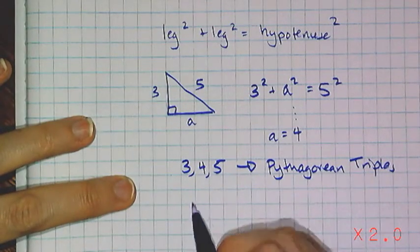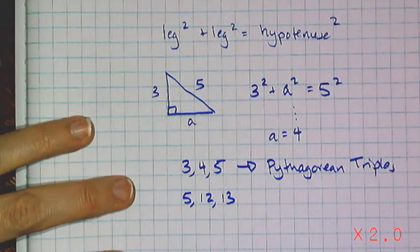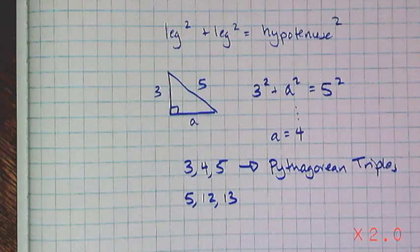And there are infinitely many of these things. 3, 4, 5 is the most famous. You also have 5, 12, 13. And if you just look up Pythagorean triples, you will find infinitely many of them available to you.